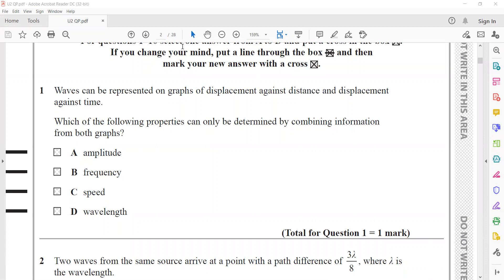Waves can be represented on graphs of displacement against distance and displacement against time. Which of the following properties can only be determined by combining information from both graphs? If we have a displacement-distance graph, we can work out the wavelength. If we have a displacement-time graph, we can work out the period and thus frequency. We have the formula v equals f lambda, so combining the two graphs we can find the speed. That's why C is the right answer.